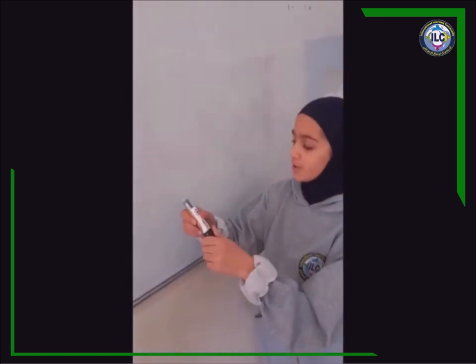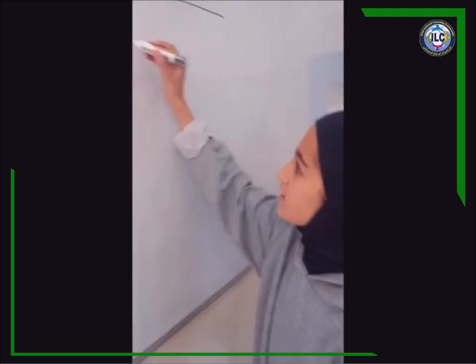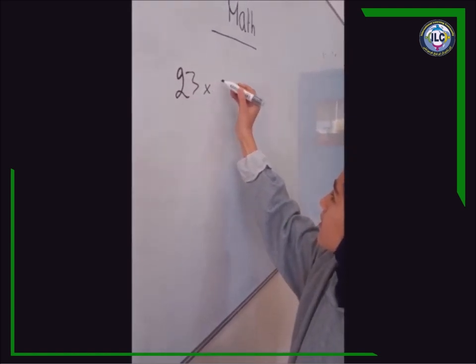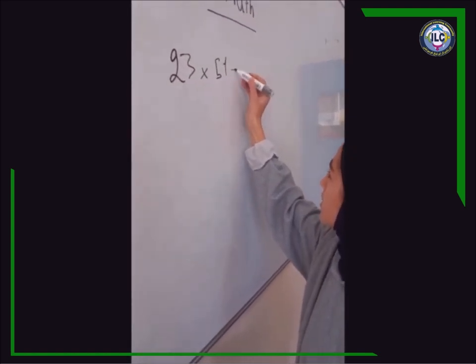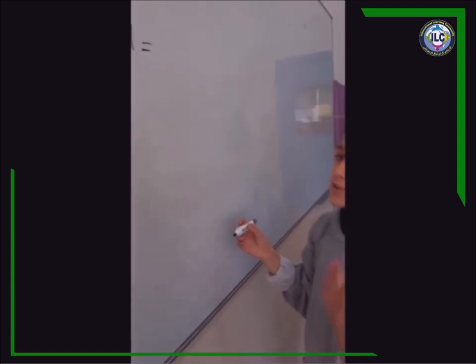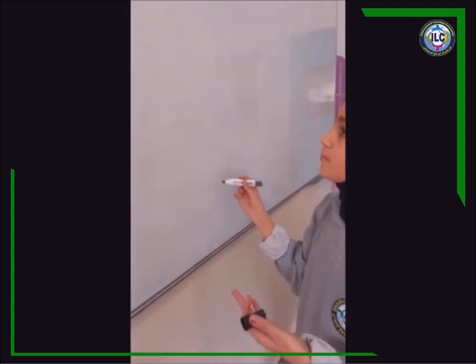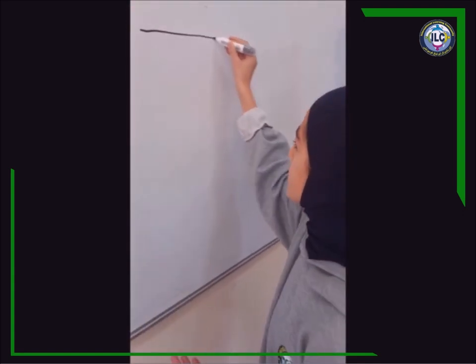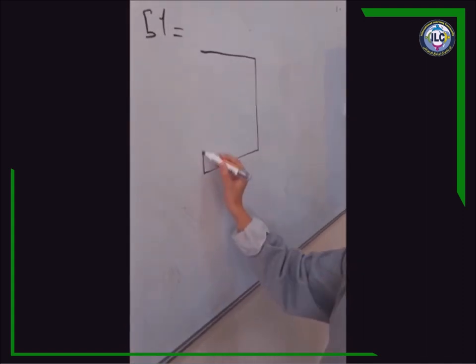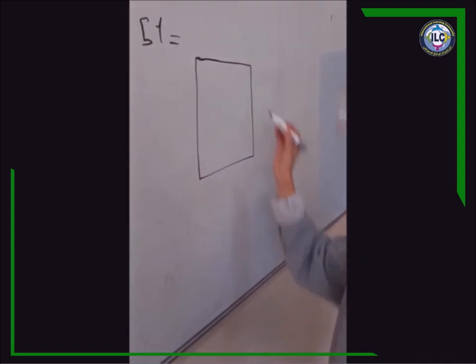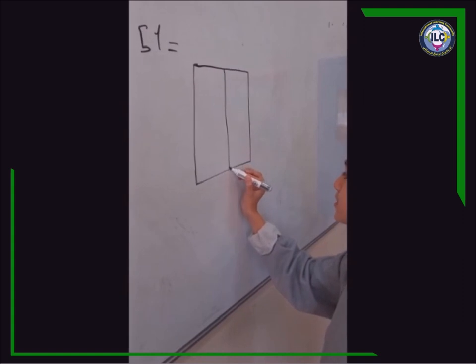First, you take your numbers. For example, 23 times 51. If you want, you can do the setup. This is the easy way. You draw a box and separate it into four sections.